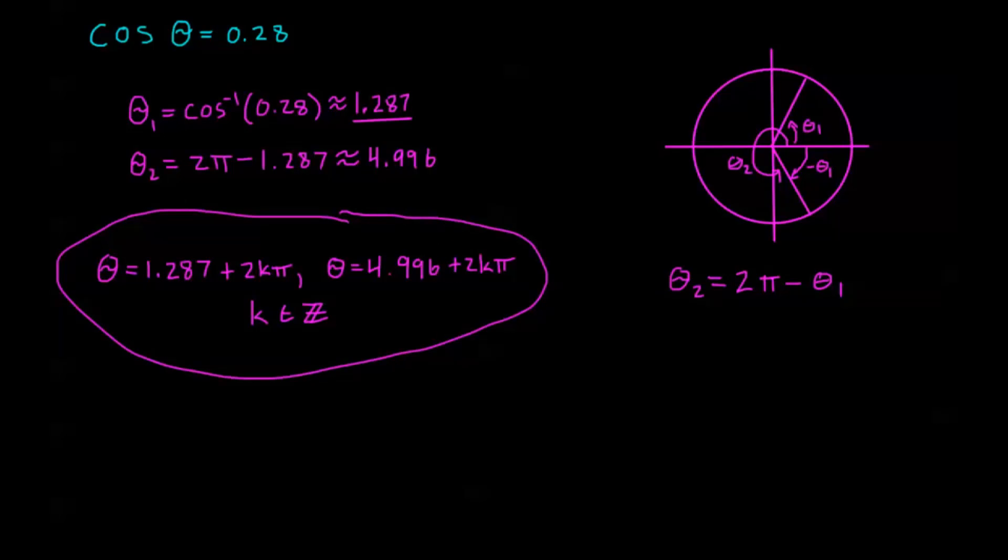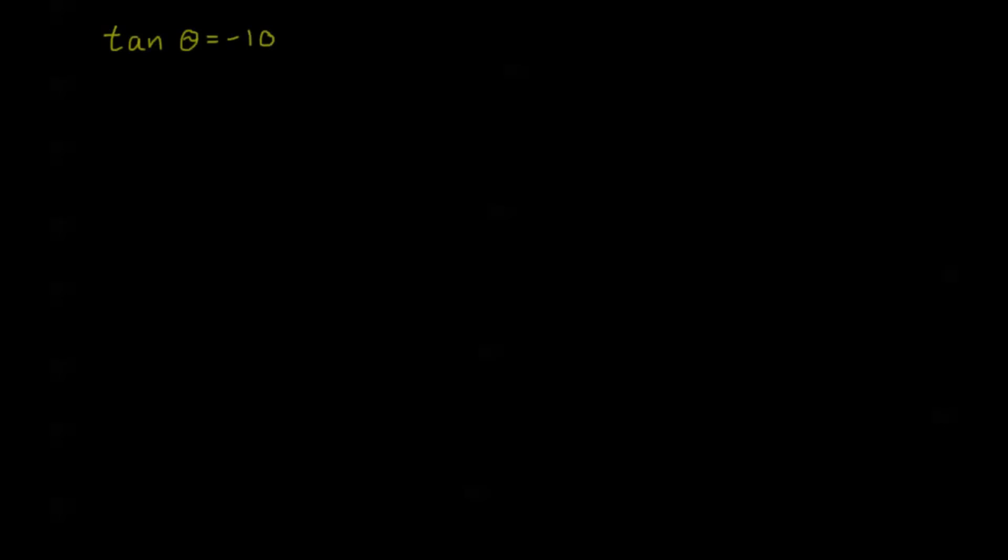Let's look at another one. Tan θ = -10. So again, the first solution we find is going to be found by looking at θ equals tangent inverse of -10. Now tangent inverse of -10, plugging that into your calculator, again we're going to keep working with radians here, so make sure you're in radian mode. This is about -1.47.